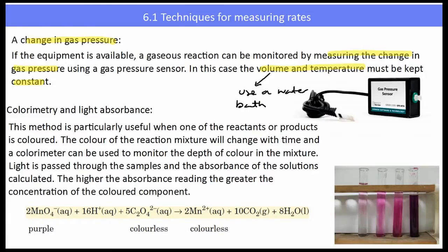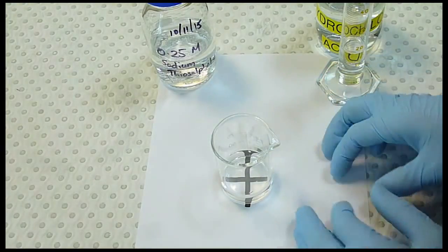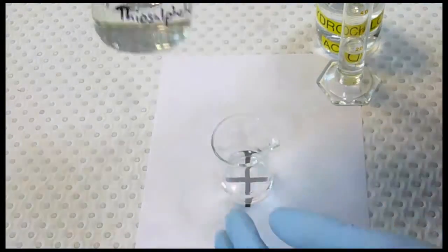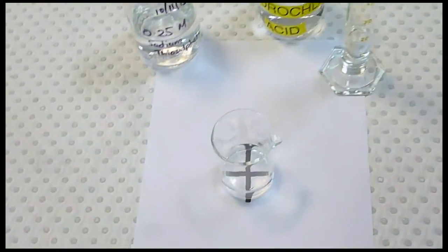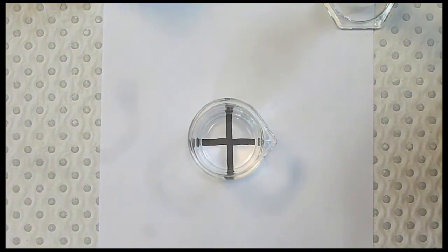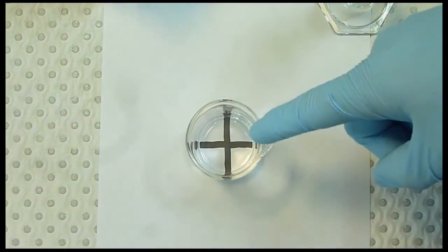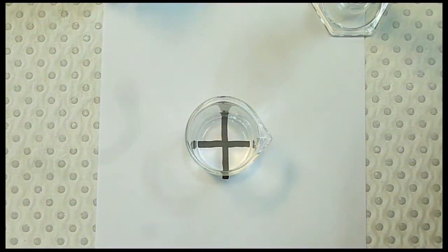An example of a calorimetry or light absorbance process is the reaction that is up now. The final reaction is where we would predetermine a point where we stop the reaction. This reaction takes place between sodium thiosulfate and hydrochloric acid. At the moment I have my sodium thiosulfate in my beaker. It's a colorless solution and I've drawn a black cross at the bottom. Now our predetermined point where this reaction is complete is when we can no longer see that black cross. As soon as I add the acid to the thiosulfate, we should get the reaction to occur. We will time the reaction to work out the reaction rate.